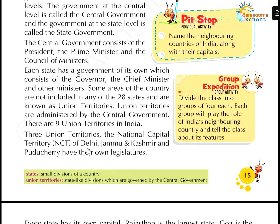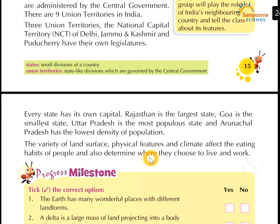These are the names of the nine union territories. Three union territories — the National Capital Territory of Delhi, Jammu and Kashmir, and Puducherry — have their own legislatures. These three union territories, NCT Delhi, Jammu and Kashmir, and Puducherry, have their own legislatures.